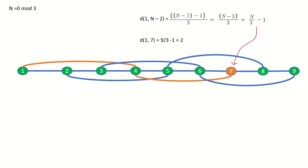Then we could take two steps to the right to give us n over 3 plus 1 steps, or one step backwards and a skip 3 leap forward also giving us n over 3 plus 1 steps. However we do it we can't get any shorter than that. So when n is 0 mod 3 the distance between the first and last vertex is n over 3 plus 1, or in this case 4.